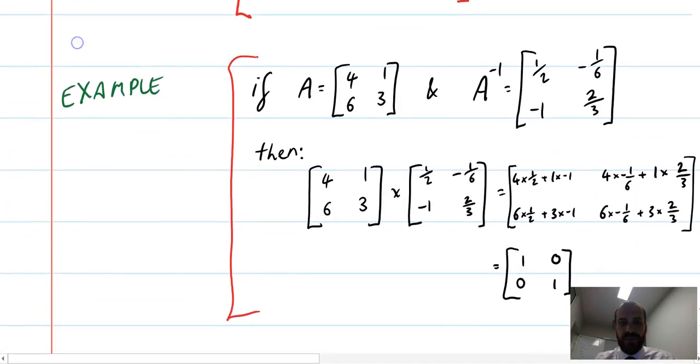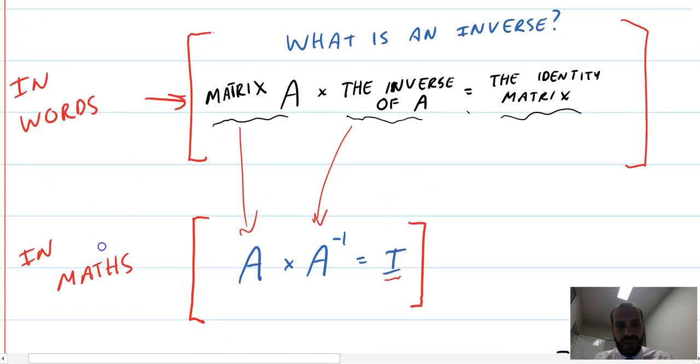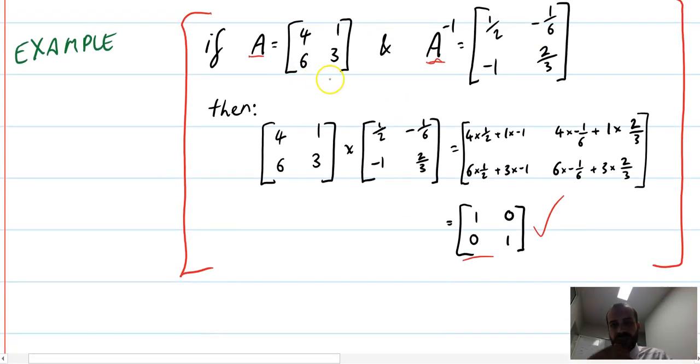Using concrete numbers, we can say that if A is 4, 1, 6, 3, then the multiplicative inverse, we'll figure out how to figure out what the multiplicative inverse is in a minute. The multiplicative inverse is 1 half, negative 1 sixth, negative 1, and 2 thirds. If I multiply matrix A by matrix inverse A, I get this: 1, 0, 0, 1, which is the identity matrix.